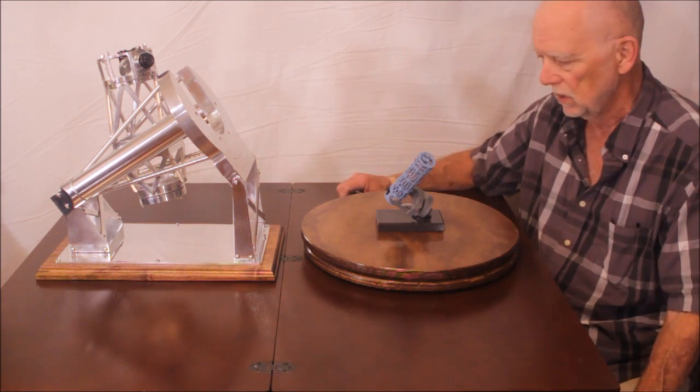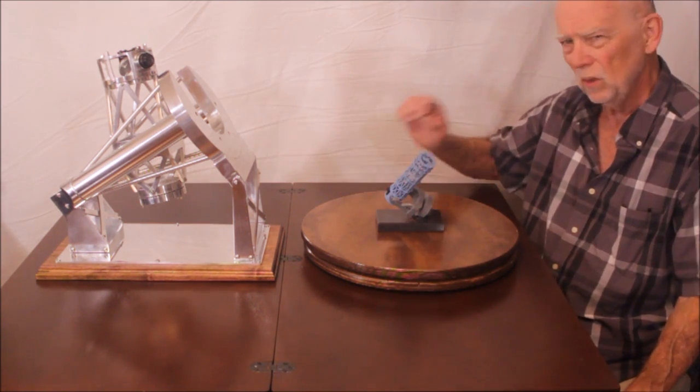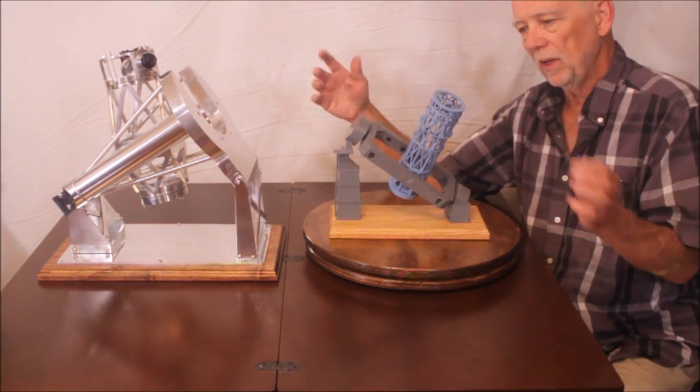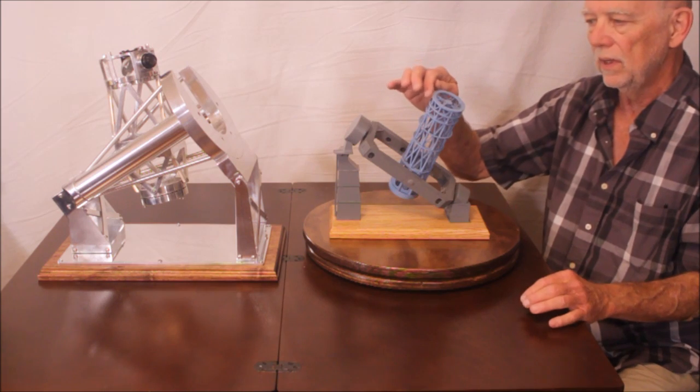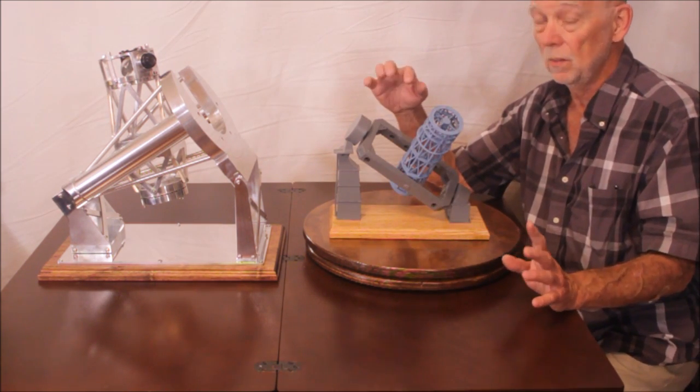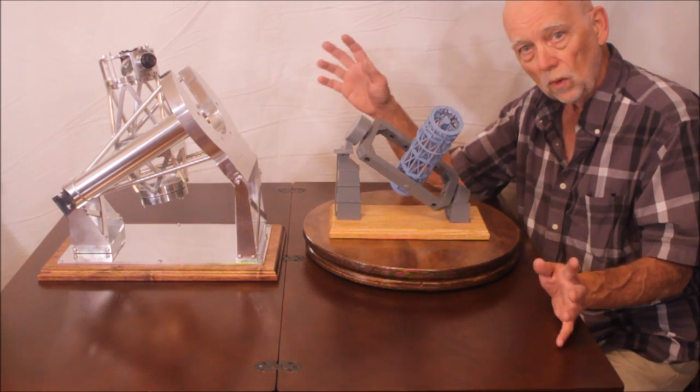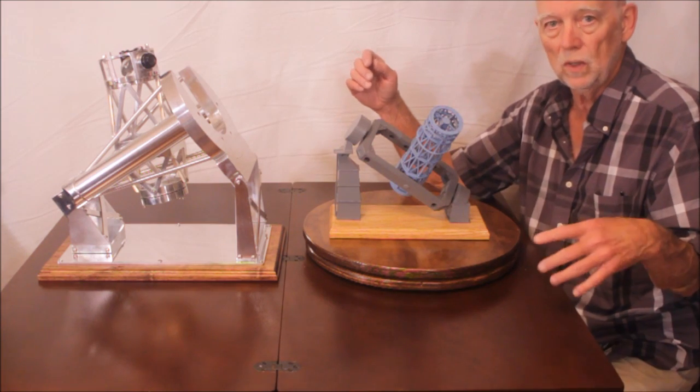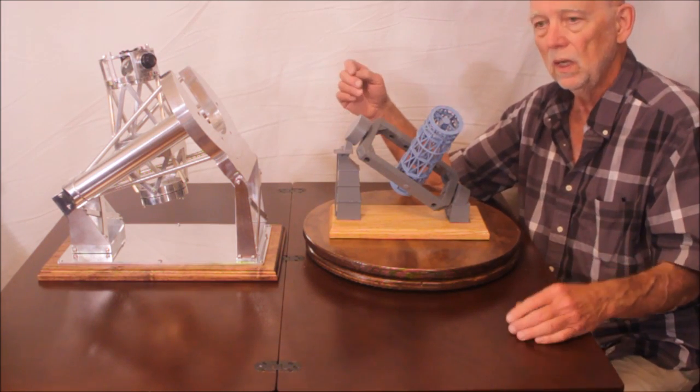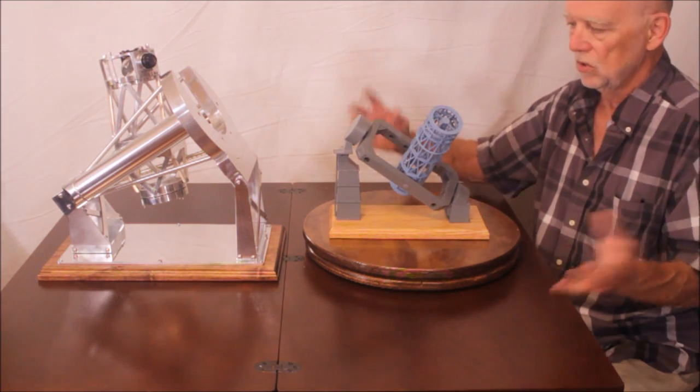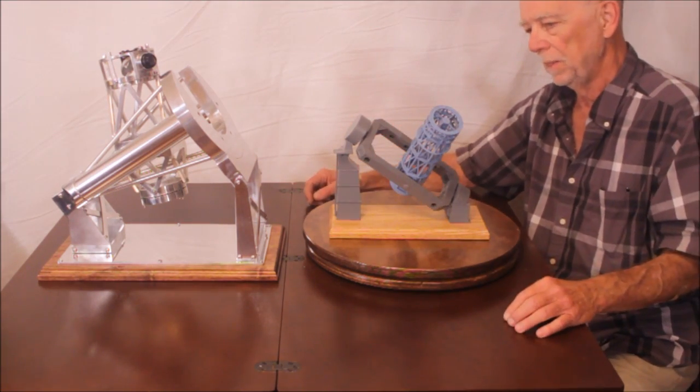Here's another model, this is also by Barry Christ. This is the 100 inch Hooker telescope. This telescope did some of the most valuable and important work in the early 1900s, 1920, 1930, 1940. Hubble discovered the expansion of the universe with this telescope.